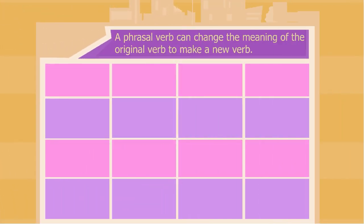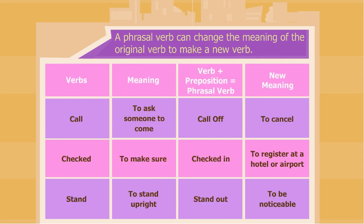A phrasal verb can change the meaning of the original verb to make a new verb. Let us look at some examples to understand this. The verb 'call' normally means to ask someone to come, but the phrasal verb 'call off' means to cancel. Similarly, the verb 'checked' refers to make sure or confirm, but the phrasal verb 'checked in' means to register at a hotel or airport. The verb 'stands' means to stand upright, but the phrasal verb 'stand out' means to be noticeable.